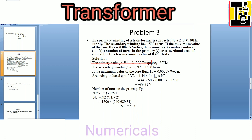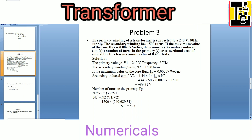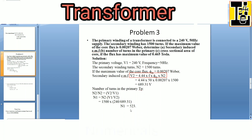The primary voltage V1 given is 240 volt at frequency 50 hertz. N2 is 1500 turns. The maximum value of the core flux φm is equals to 0.00207 Weber. By using the EMF equation, V2 is equals to 4.44 into f into φm into N2. We can calculate the secondary induced EMF as 689.31 volts.